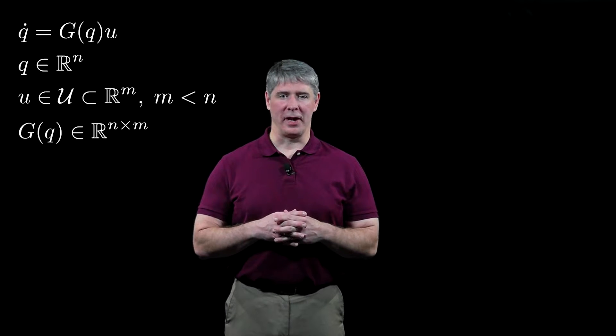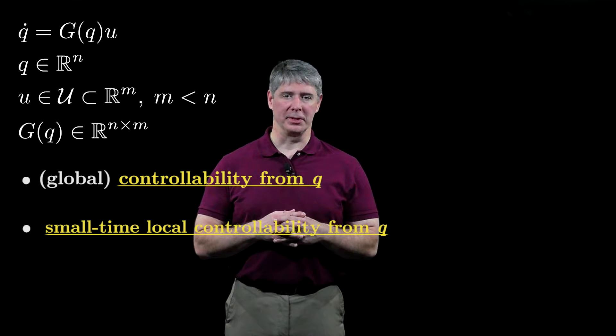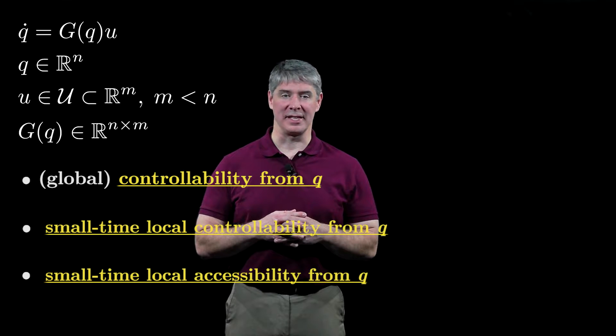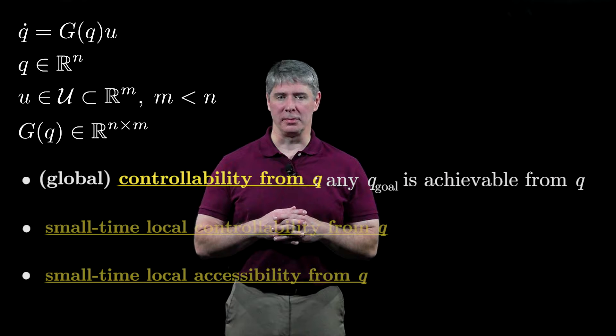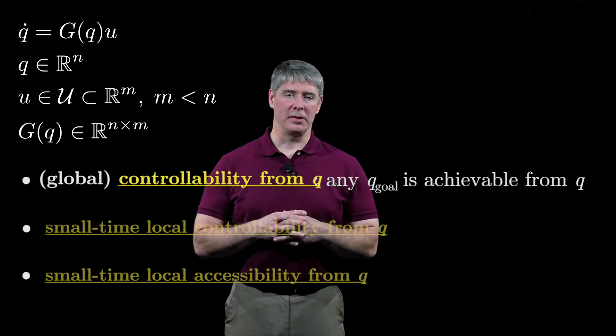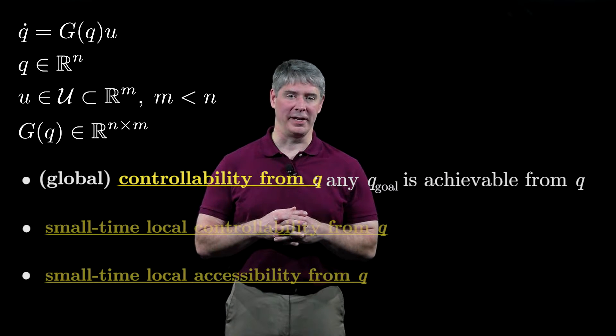For a system like this, we can define global controllability, small-time local controllability, and small-time local accessibility. First, we say the robot is controllable from a configuration q if, for any q_goal, there exists a control that drives the robot from q to q_goal in finite time.